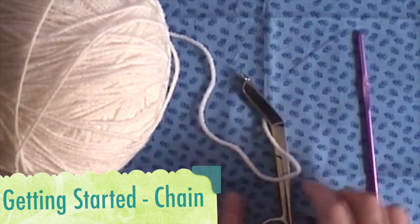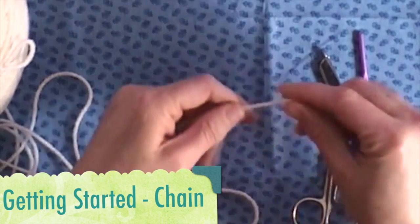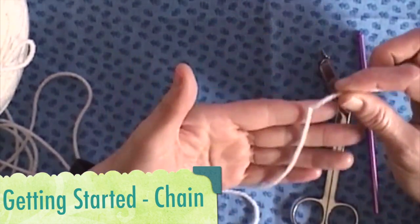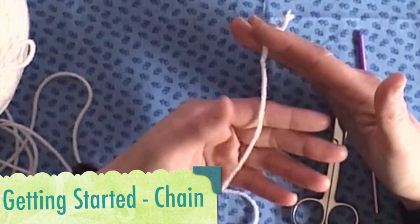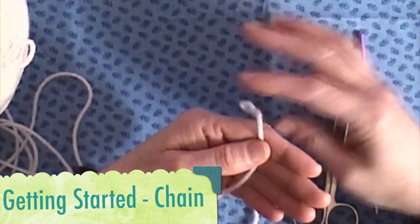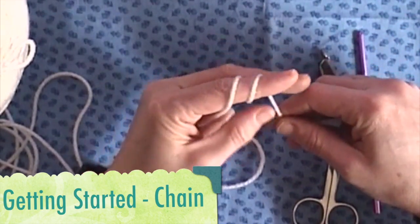Scissors and yarn, that's it. So let's get started. To start, what I usually do is take my yarn with the end at the top here and just wrap it around my finger twice.